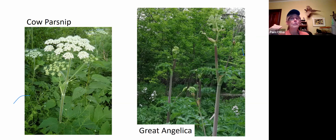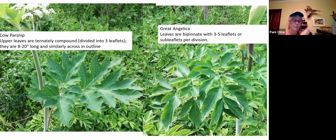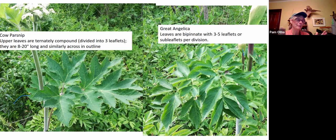Cow parsnip and great angelica are both starting to bloom now. But if next year rolls around in early May and you see these giant leaves coming up out of the ground, look at how those leaves are growing: three large leaflets on cow parsnip, versus the multiple smaller divided leaflets on great angelica. Maybe a memory trick: 'great angelica' has a great number of divisions in the leaves.